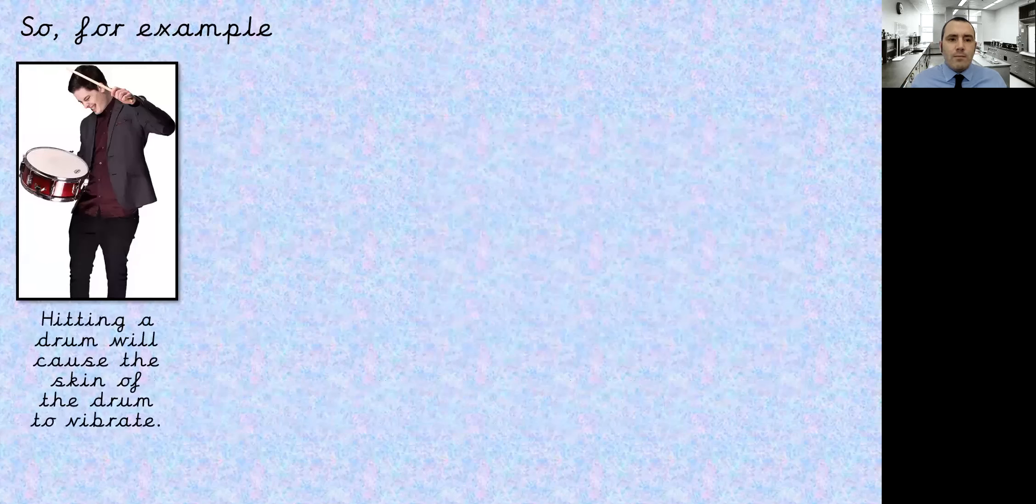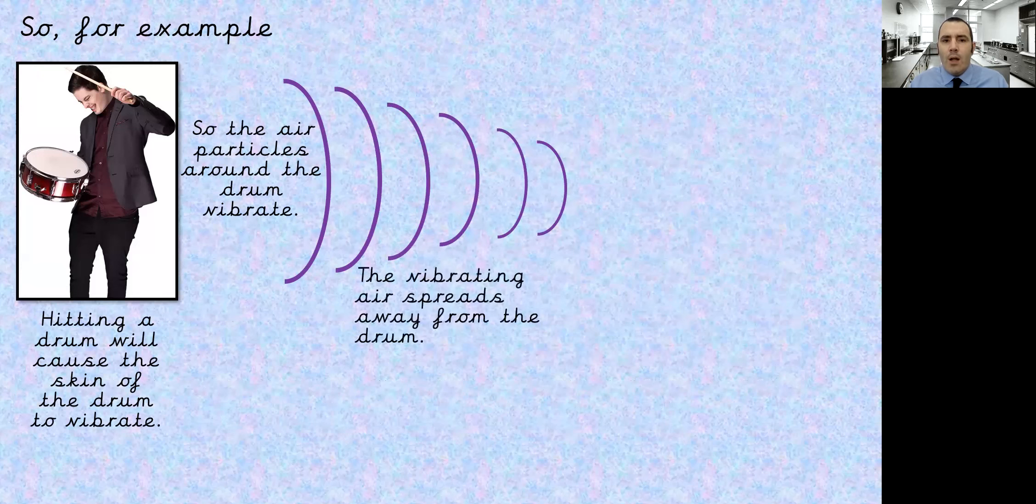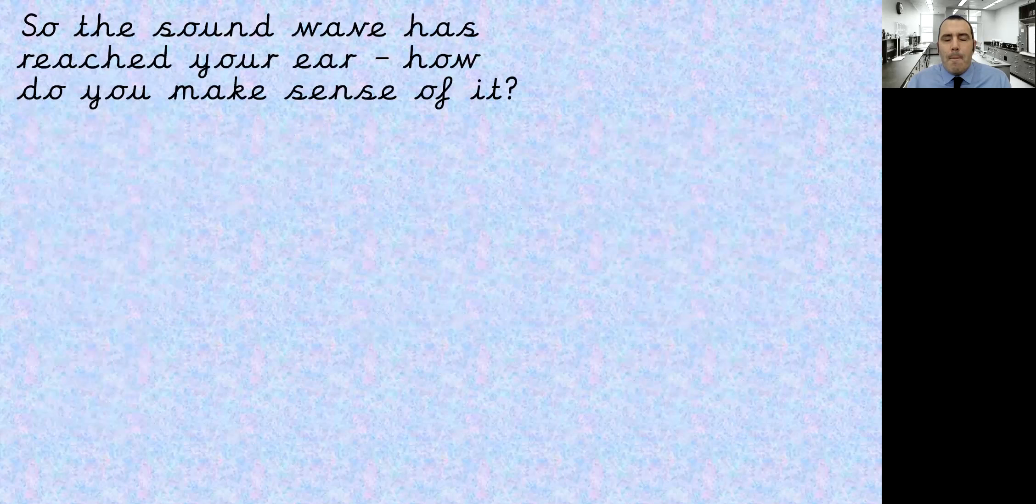So our example. We have a drum. And hitting that drum causes the skin of the drum to vibrate. The air particles around the drum skin start to vibrate, and we have our wave forming. So here we go, the wave traveling through the air. The vibrating air spreads away from the drum, so the same way as it does when you drop that pebble in the pond. It's not just going to go to the right of our screen, it's going to go all the way around the screen. Finally, your ear picks up the sound wave, and your brain translates the sound. So we've got the sound wave from our drum, it's come through the air, and it's arrived at our ear. What happens next? How do we make sense of it?